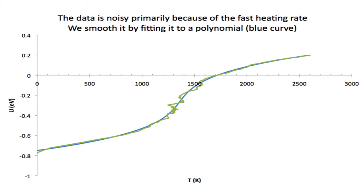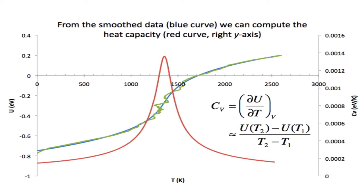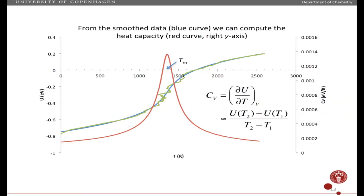The blue curve I'm going to use to calculate how fast the energy changes as I change the temperature, which is the heat capacity. You can see that the heat capacity, which is the red curve here, is a maximum, exactly here where the energy changes the most as a function of temperature, or conversely where the temperature changes the least as a function of added energy.